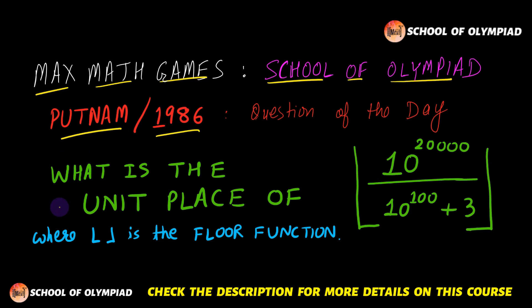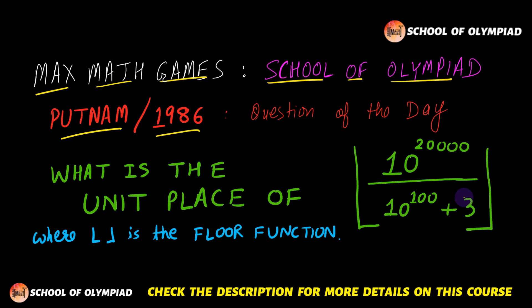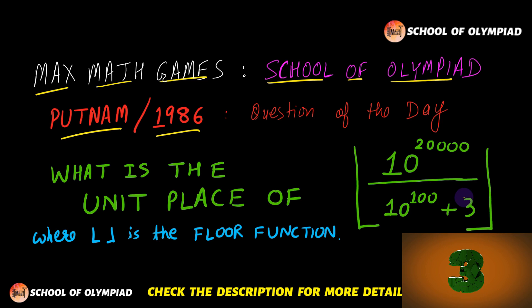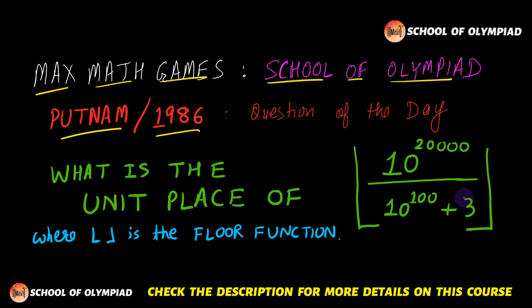The question of the day is: what is the unit's place of this expression? The expression is the floor function of 10 raised to the power 20,000 divided by 10 raised to the power 100 plus 3. Pause the video if you want to give this question a try, and then resume when you want to check out the solution.